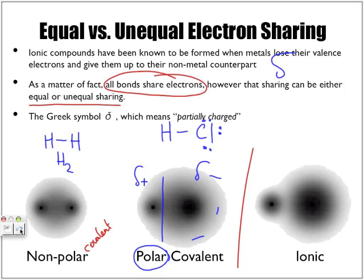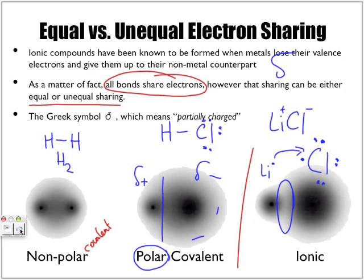For ionic bonding, let's look at lithium chloride. Lithium has one valence electron which it's going to lose to chlorine, which has seven valence electrons and picks up that one. By losing that electron, lithium becomes positive, and chlorine becomes negative, and there is an attraction because they're oppositely charged. The gap between the two atoms is not quite the same as in polar covalent bonds. So here we don't have slightly positive and slightly negative — we actually have a fully positive end and a fully negative end.